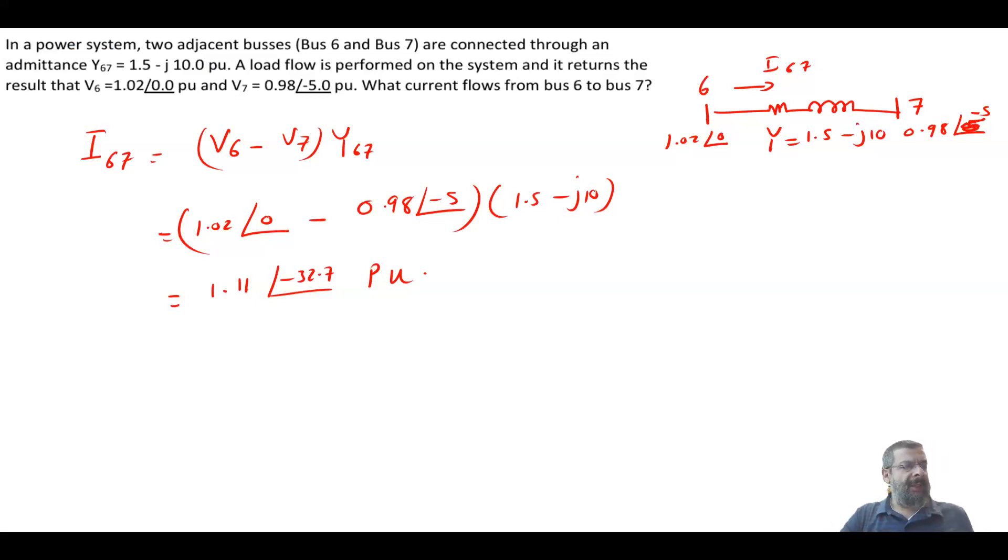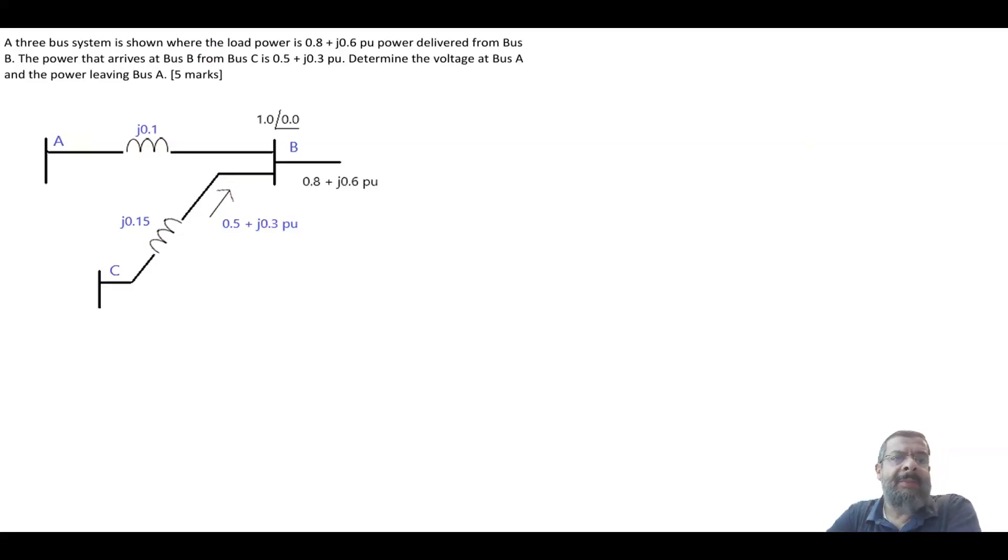Let's see the next one. The next one says here, a 3 bus system is shown where the power 0.8 plus j0.6 power delivered from bus B. So from bus B, we have this power going this way to somewhere else. The power that arrives at bus B from C is 0.5 plus j0.3. Determine the voltage at bus A and what is the power that is leaving bus A.